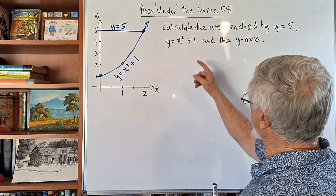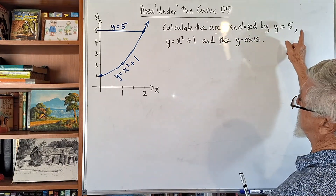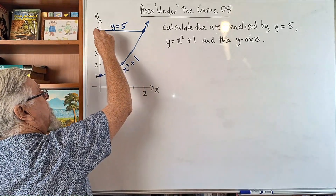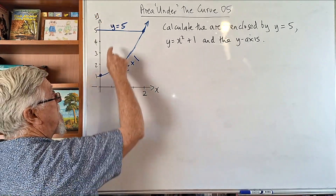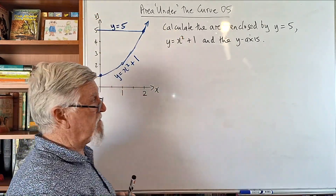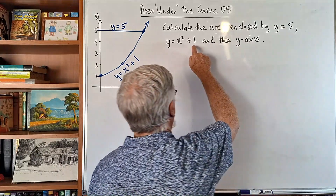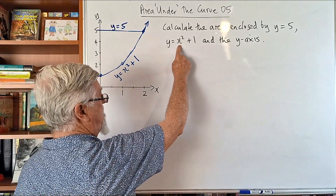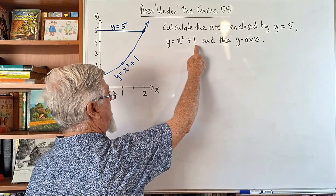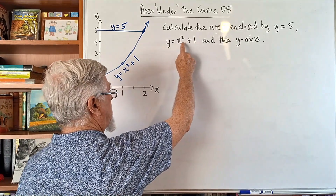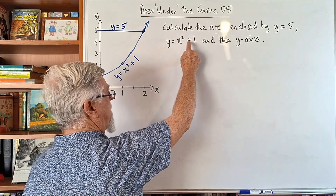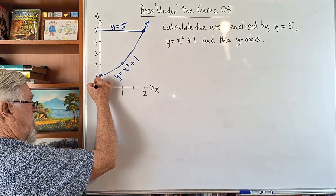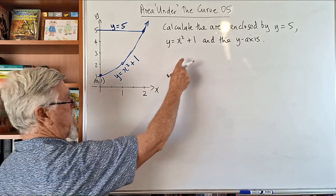Let's look at what the wording is. We need to find the area enclosed by y equals 5. Hopefully most people are okay — y equals 5 is a horizontal line at 5 on the y-axis. Then you've got the parabola y equals x squared plus 1. If you put in x equals 0, you get 0 squared plus 1, which is 1. So the y-intercept is the point (0, 1).